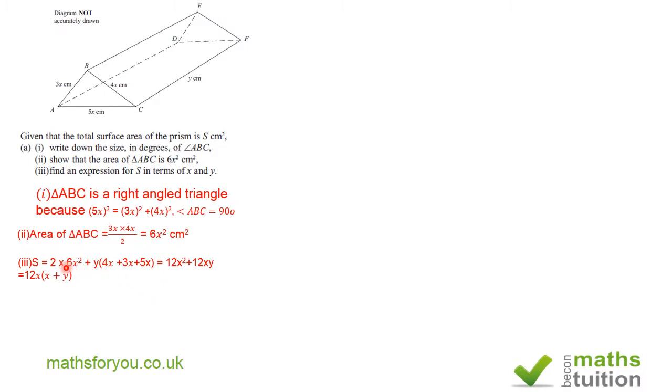So what I've done is for S, I got double 6X squared because that's the area of the triangle and I got two of those. So you double that. Plus Y into 4X plus 3X plus 5X, which gives me 12XY. So when you combine these, you get 12X squared plus 12XY. Now you can factorize this as 12X into X plus Y. It doesn't really matter. That's fine. That's acceptable then. So you get the full marks for that.